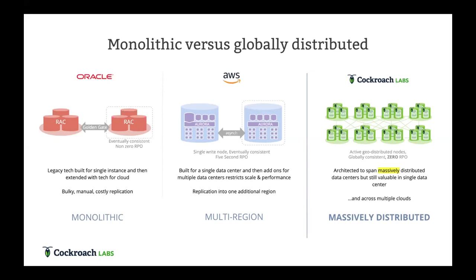AWS has done a good job pushing forward into cloud database, but Aurora is not really a distributed system — distributed storage is awesome, but in true distributed systems we think of shared nothing. Each instance of CockroachDB is its own single atomic unit that coordinates and takes part in a larger system. We don't live on top of anything that's shared, and that's what allows us to be a truly distributed system.